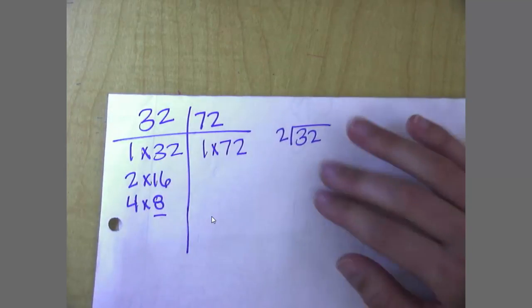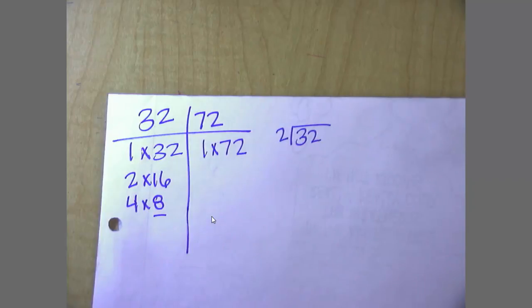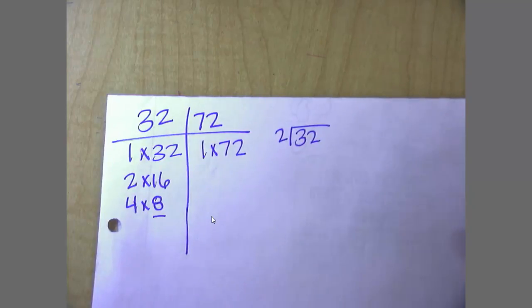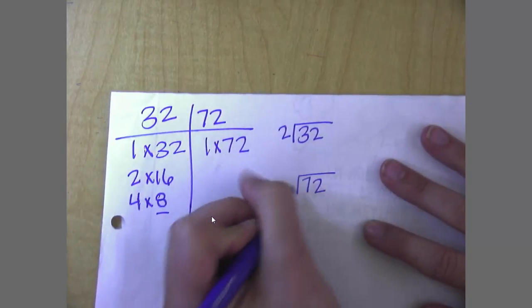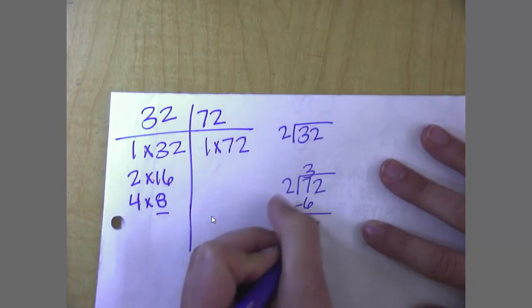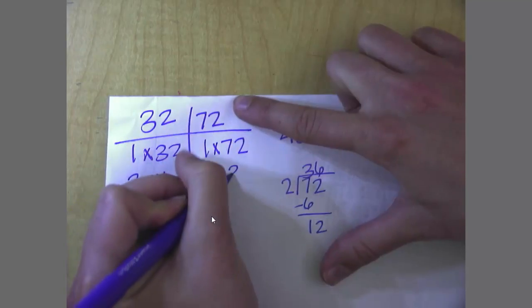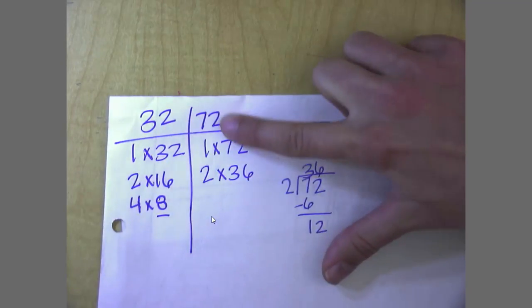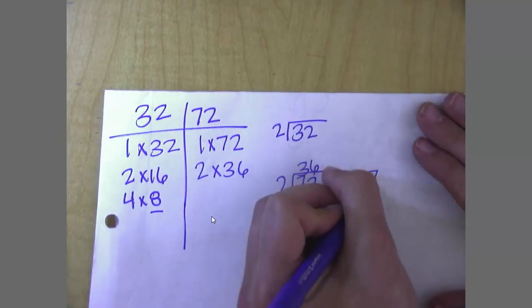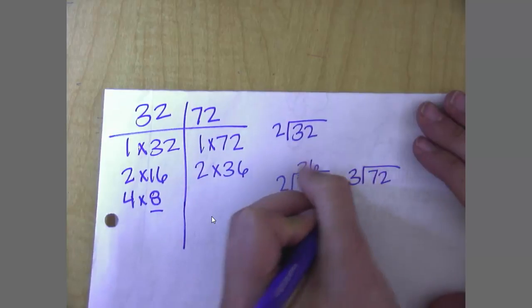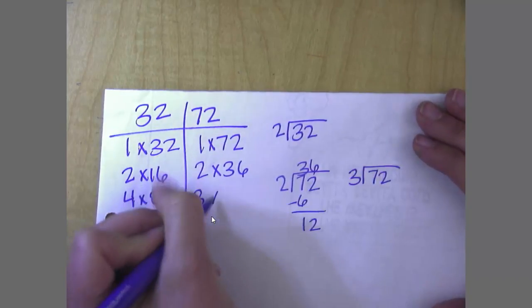1 times 72. Again, it's an even number, so I know that it's got to be something. If you don't know, then come over to this side. Do a little bit of scratch work, and we see that it's 36. So 2 times 36. Use your 3's trick. 7 plus 2 is 9. 9 is divisible by 3, so 72 is as well. Do some scratch work if you need to, and we're going to see that it is 3 times 24.